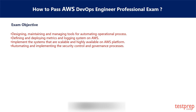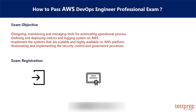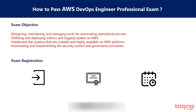Registration Process: Following are the steps to register for the AWS DevOps Engineer Professional Exam. First, register and sign into AWS Training. Then click on Certification at the top. Next, click on AWS Certification Account and schedule a new exam. Check for the exam you want to take and click the Schedule at Pearson VUE button, or PSI.